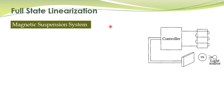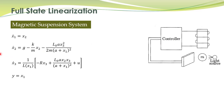Here is another example: the system which we want to control is a magnetic suspension system. There is a ball and we want to stabilize this ball at its equilibrium position by controlling the voltage applied to this coil. The force applied by this electromagnet on the ball can be controlled, and the mathematical model of this system is given here. We want to design a stabilizing controller for this system.